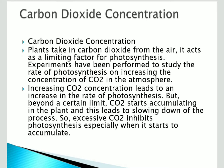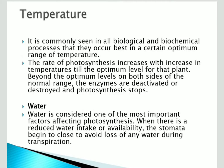The next factor is temperature. As commonly seen in all biological and biochemical processes, photosynthesis occurs best within a certain optimum temperature range. The rate of photosynthesis increases with increasing temperature up to the optimum. Beyond optimum levels, the enzymes become deactivated at higher temperatures and photosynthesis stops.